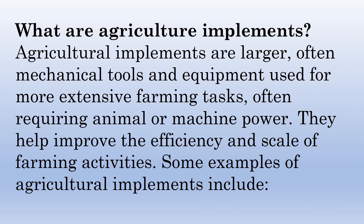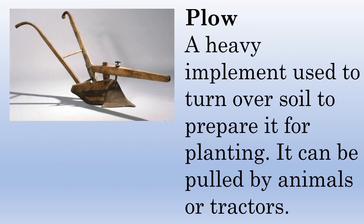What are agricultural implements? Agricultural implements are larger, often mechanical tools and equipment used for more extensive farming tasks, often requiring animal or machine power. They help improve the efficiency and scale of farming activities. Plow — a heavy implement used to turn over soil to prepare it for planting; it can be pulled by animals or tractors.